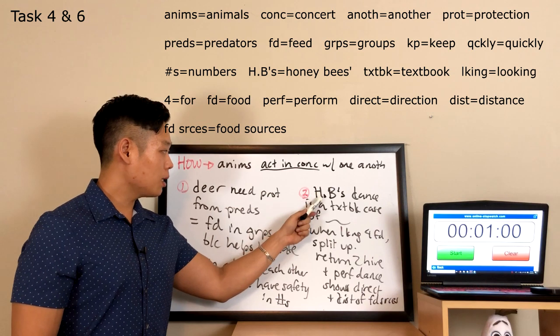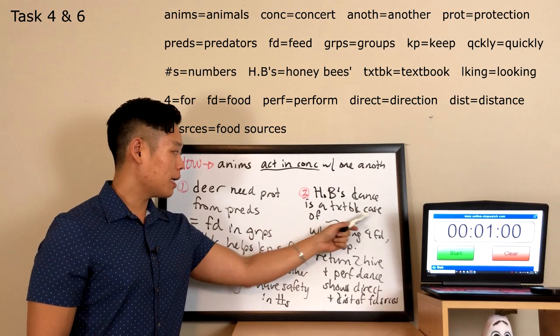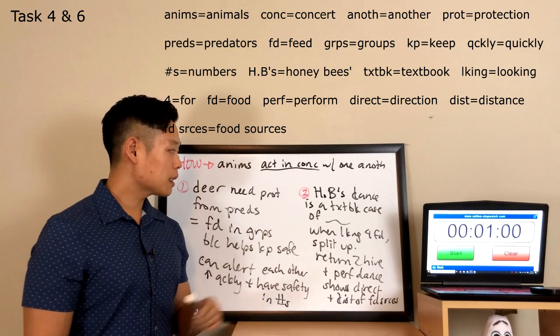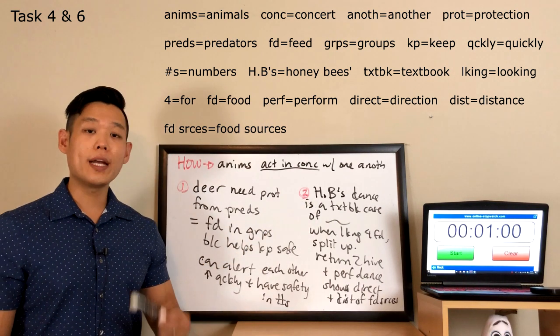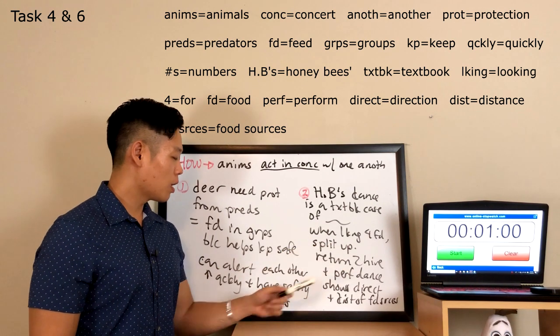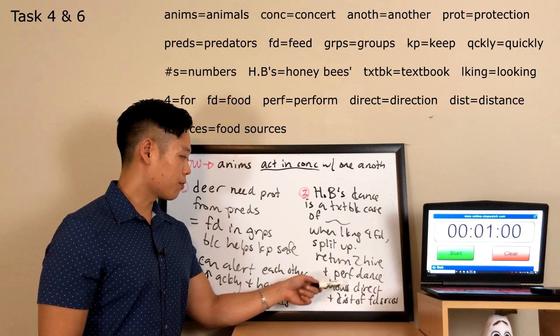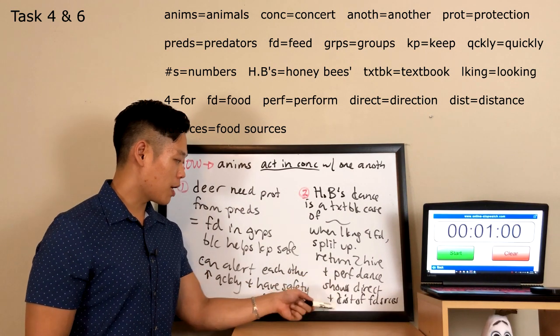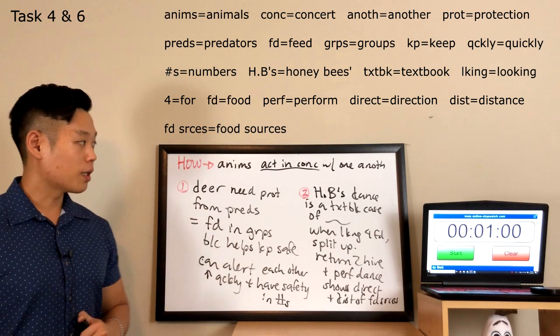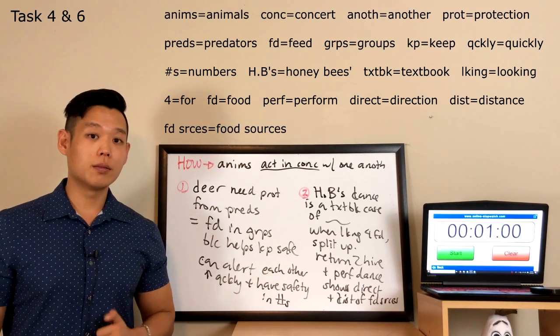Now the second part says, honeybees dance is a textbook case of animal cooperation. Is a textbook case of means is a great example of. When looking for food, split up, return to hive and perform dance that shows direction and distance of food sources. Now that we know what I took notes on, let's listen to my sample response.